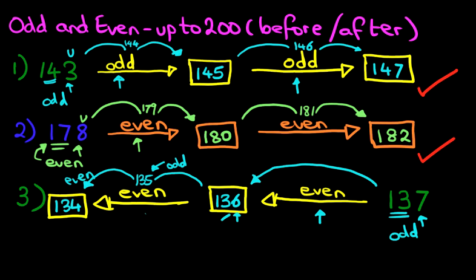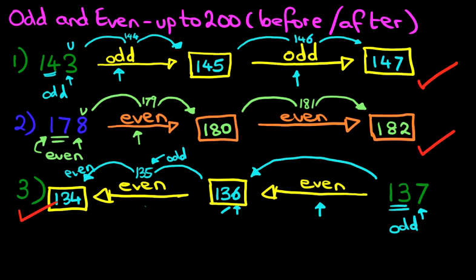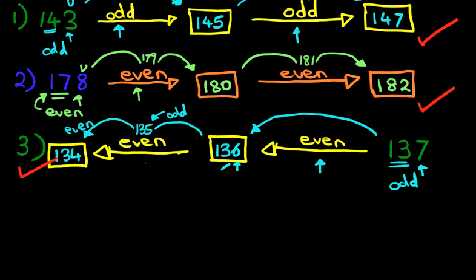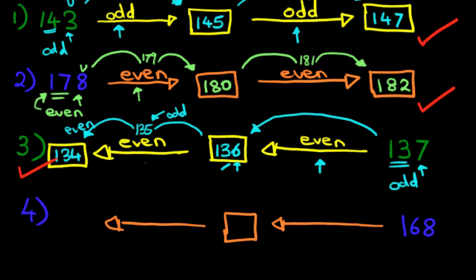So have a close look at how we did question three — it's very, very important. We're going to give this one a nice big tick. Now we're just going to scroll down so we have a bit of room and work through our final example. Suppose we have the number 168, and the question states that we have to work out the odd numbers before 168.